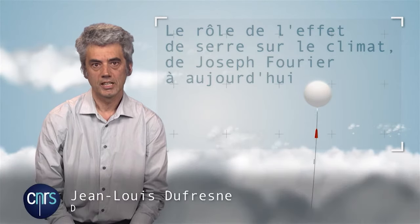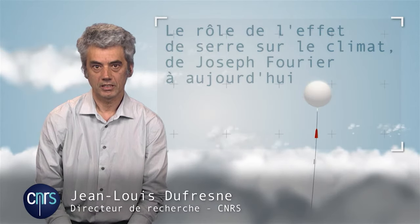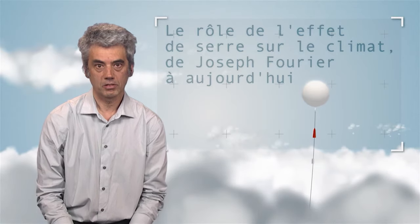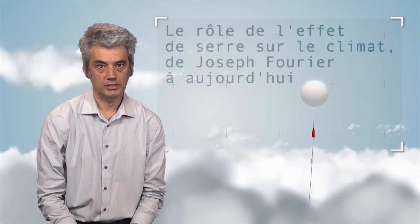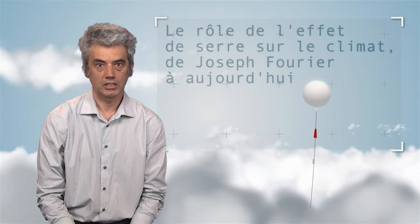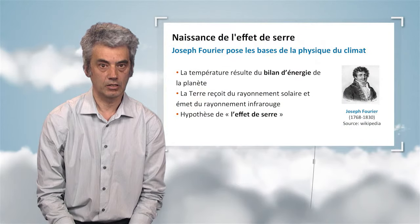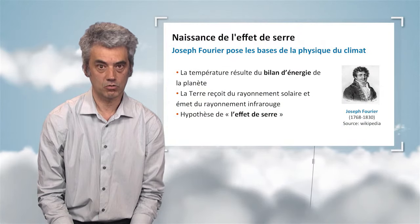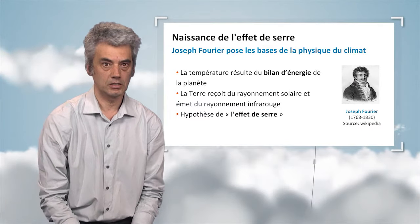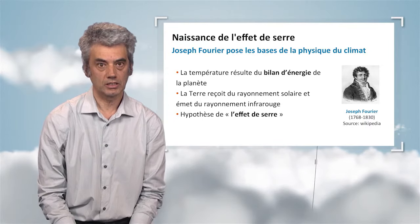Joseph Fourier at the beginning of the 19th century for the first time showed what we now call the greenhouse effect. At the time, he was trying to understand the physical phenomena on the earth with an assumption according to which the earth was warmed from the inside — it had a sort of fireball inside which heated up the surface and played an essential role on the surface temperature.